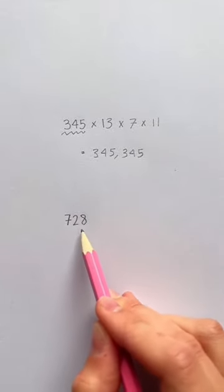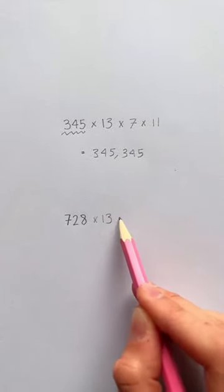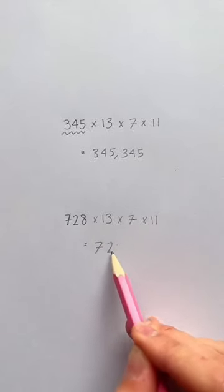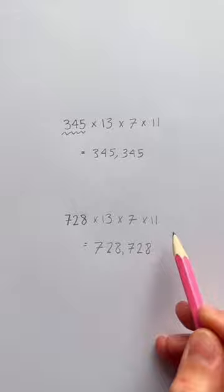So we had a number like 728 and multiply it by 13, then 7, then 11, this will equal to 728,728. Pretty cool, isn't it?